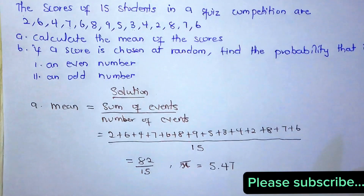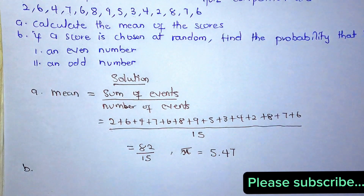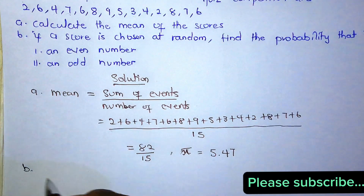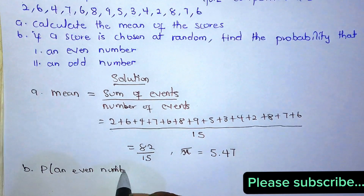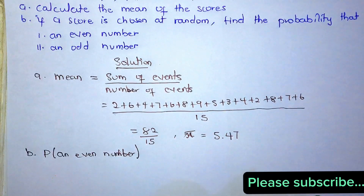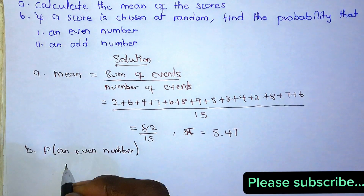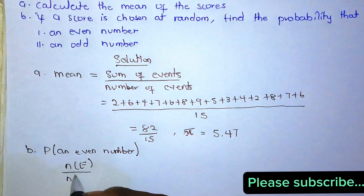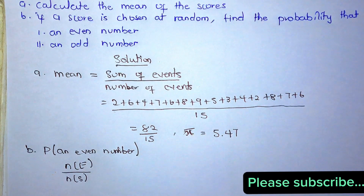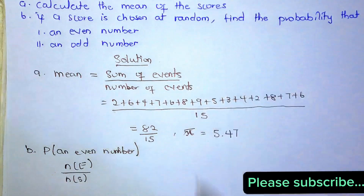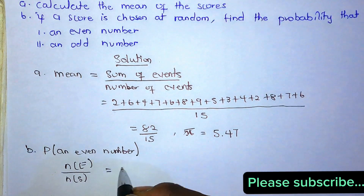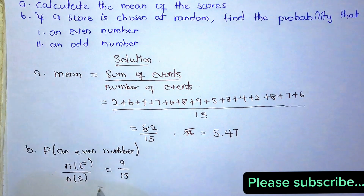Part b: if a score is chosen at random, find the probability that it is an even number. The even numbers in the dataset are: 2, 6, 4, 6, 8, 2, 8, 6 — that gives 9 even numbers. So probability of an even number = 9/15 = 3/5.